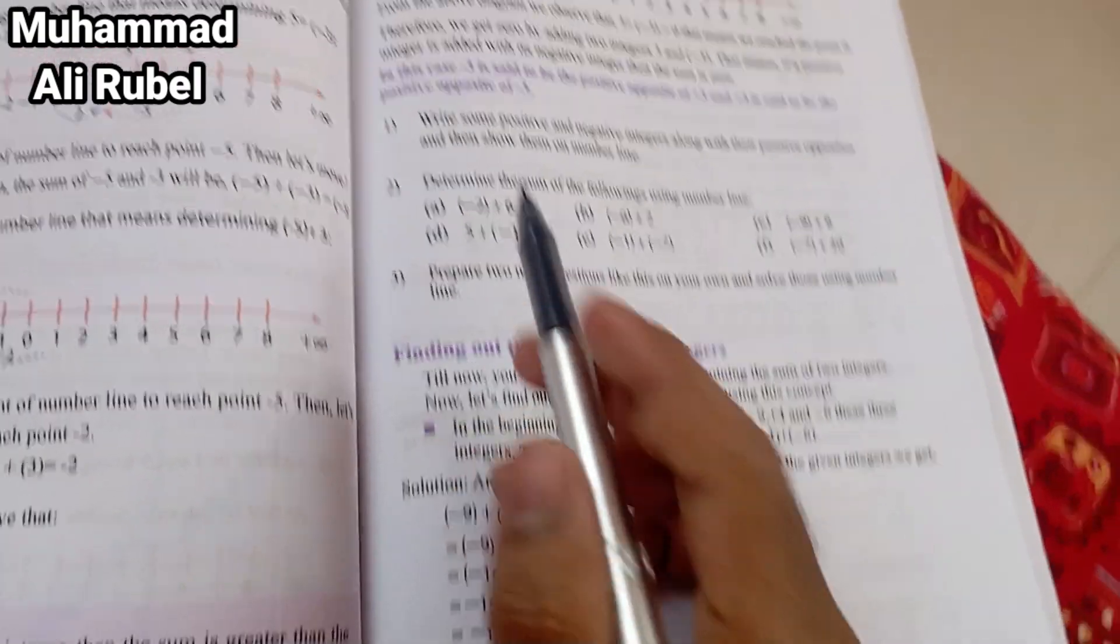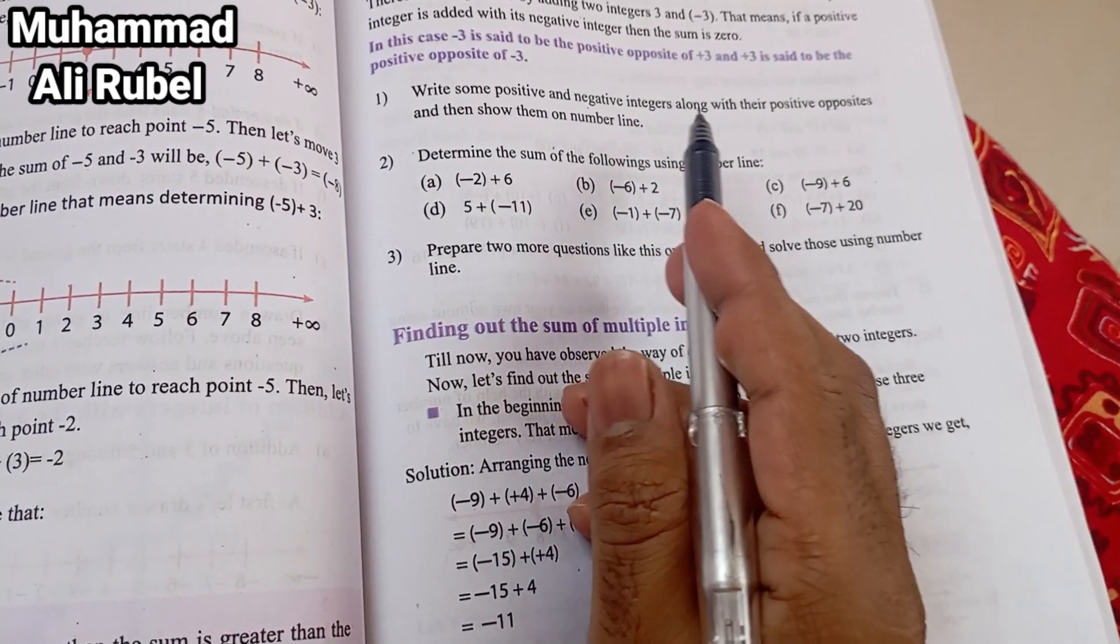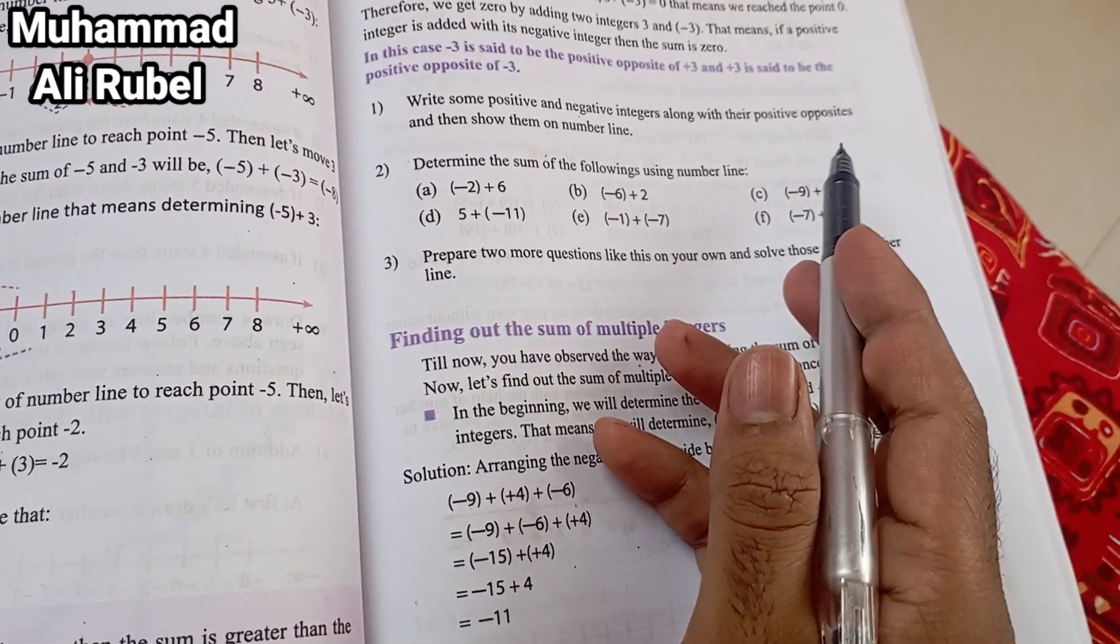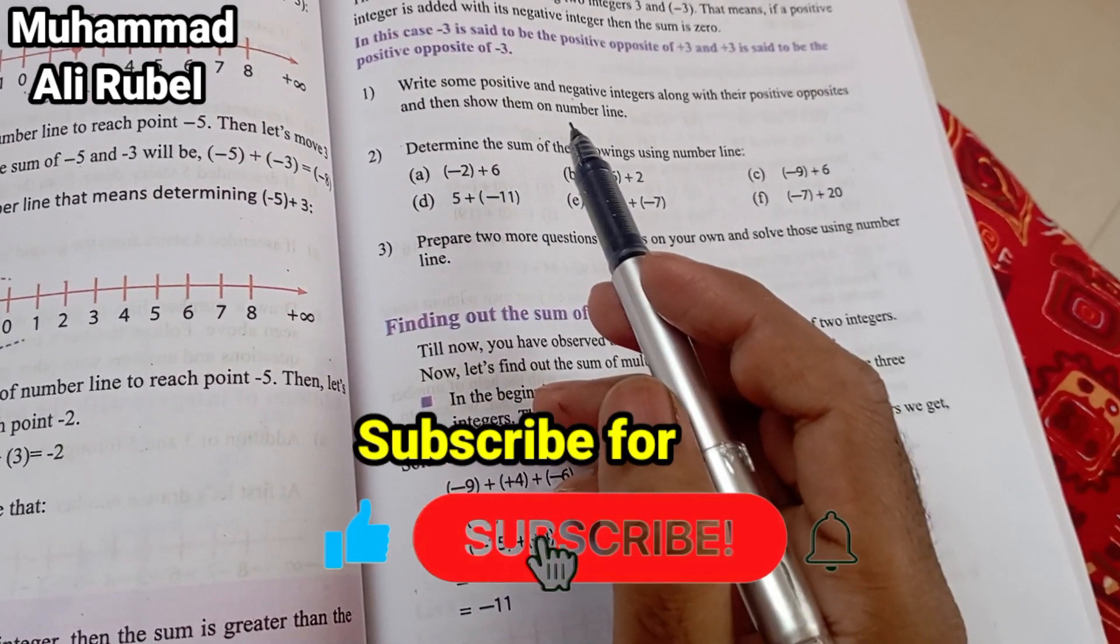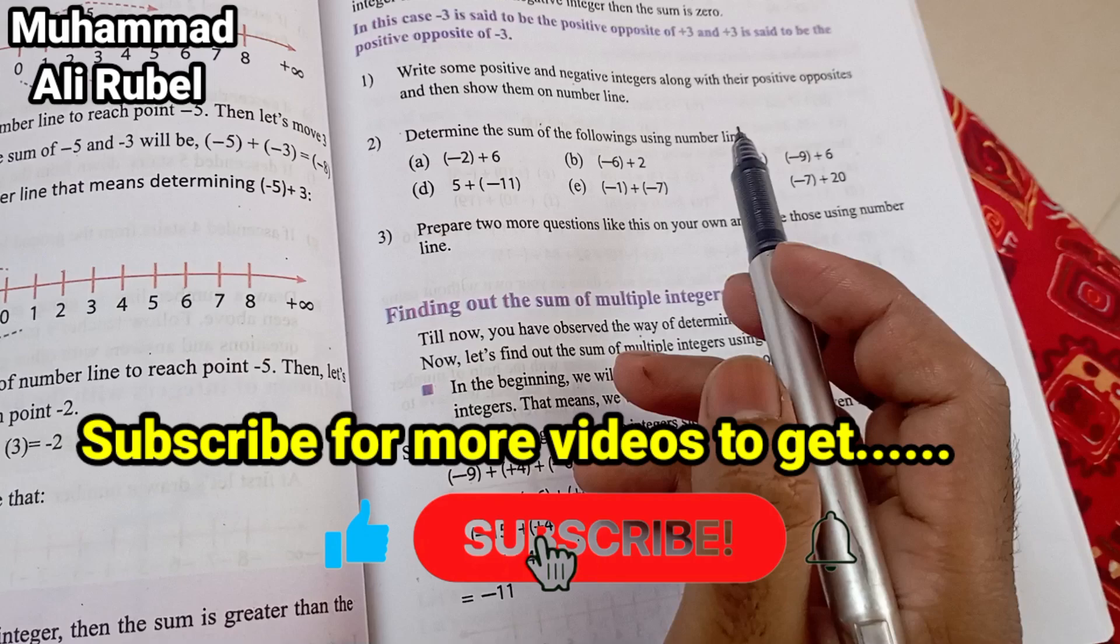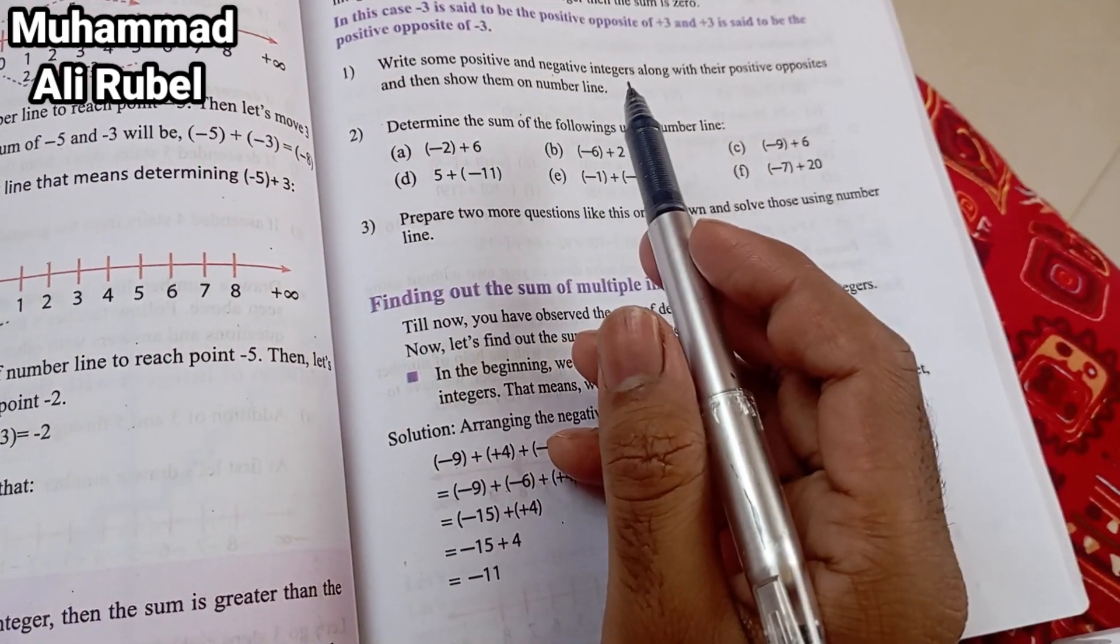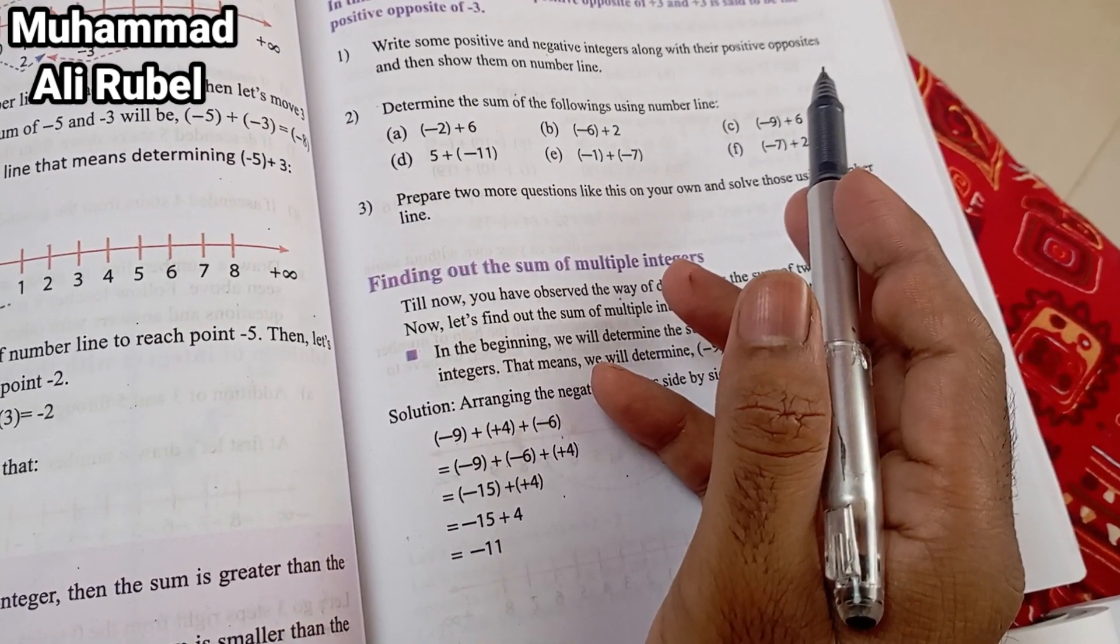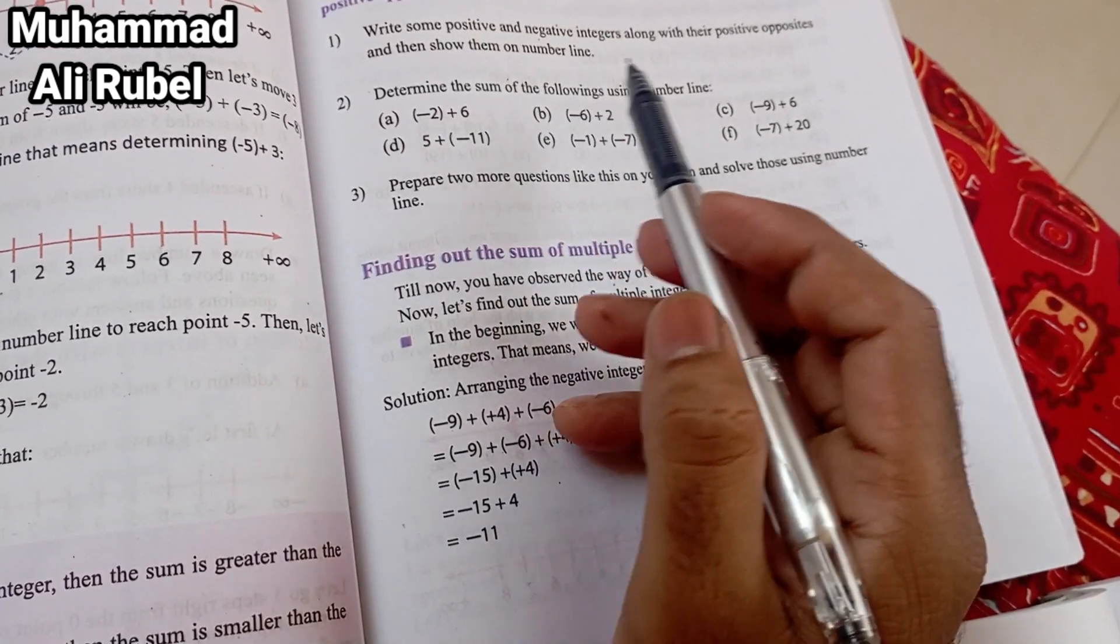Write some positive and negative integers along with their positive opposites and then show them on the number line.